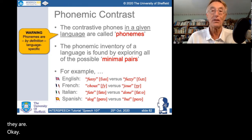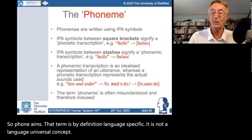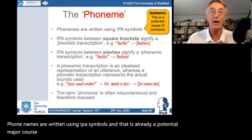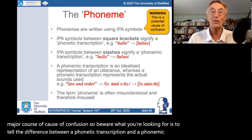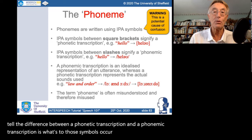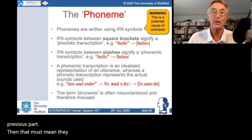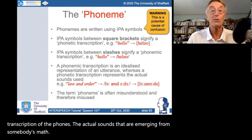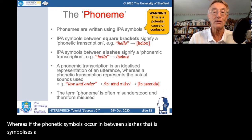Phonemes — that term is by definition language specific; it is not a language universal concept. Phonemes are written using IPA symbols, which is already a major potential cause of confusion. To tell the difference between a phonetic transcription and a phonemic transcription, look at the context: if the symbols are between square brackets, that is a phonetic transcription of the actual sounds. If the phonetic symbols occur between slashes, that symbolizes a phonemic transcription — a language-specific one.